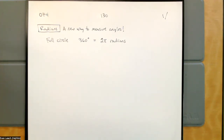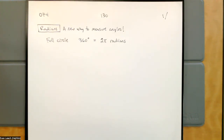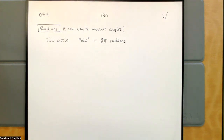A full circle that we would normally say is 360 degrees — a full circle is 360 degrees, and that's going to be equal to 2 pi radians. Another common way to remember this is with a half circle: 180 degrees is pi radians.